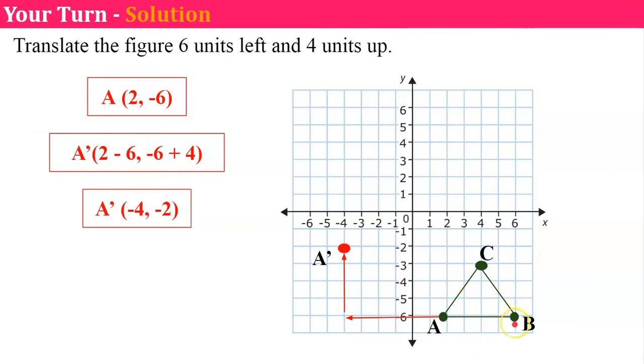B, I'm going to go six units to the left. One, two, three, four, five, six. And four units up. One, two, three, four. And there's B prime. And C prime. One, two, three, four, five, six. One, two, three, four up. And there's my C prime. Connect your vertices. I have my image of my original figure. It's been translated six units to the left and four units up. And you can see they are congruent triangles.